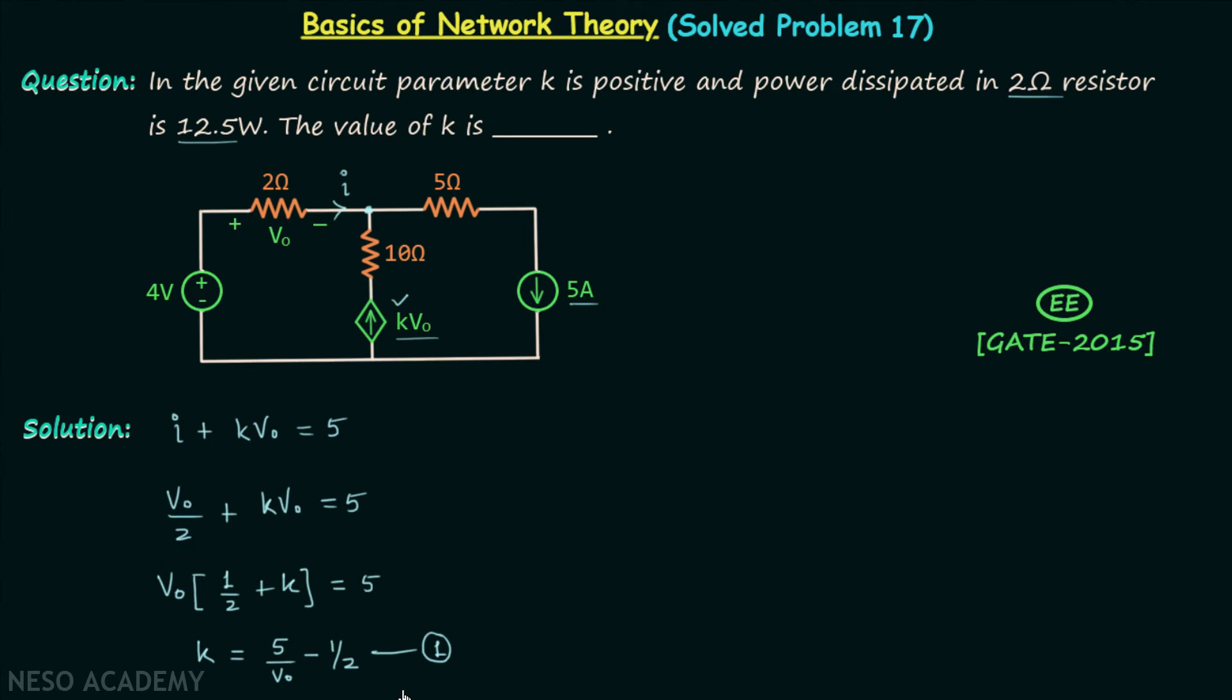We want to calculate the value of parameter k, and we can have k if we know the value of v0. So now we want to calculate v0.